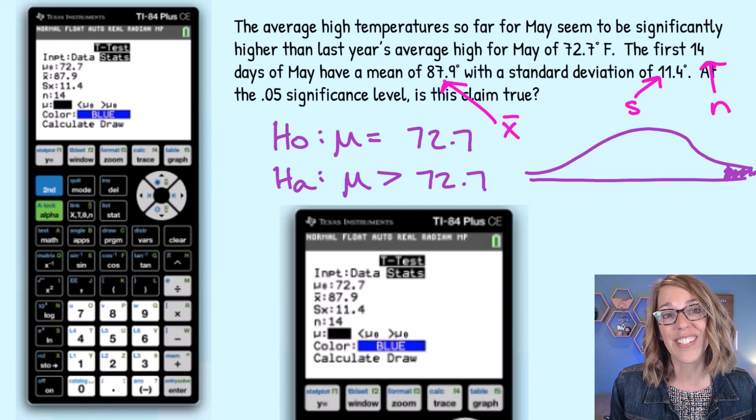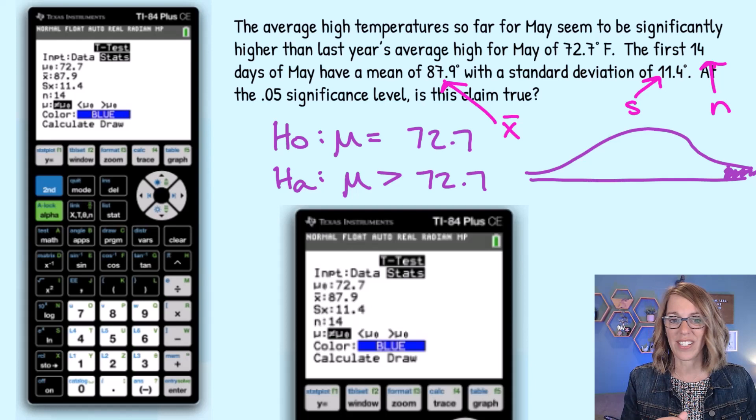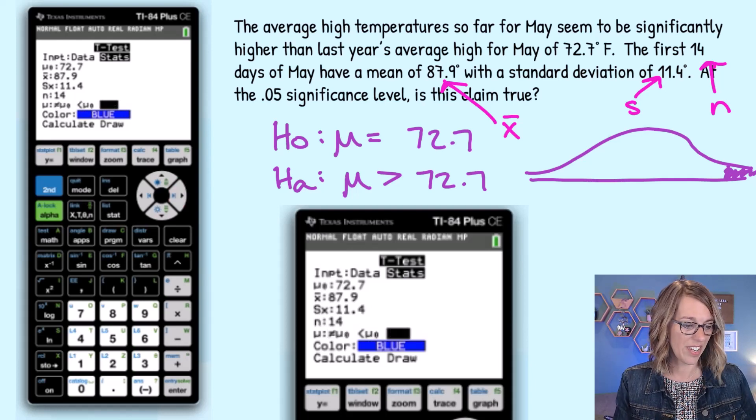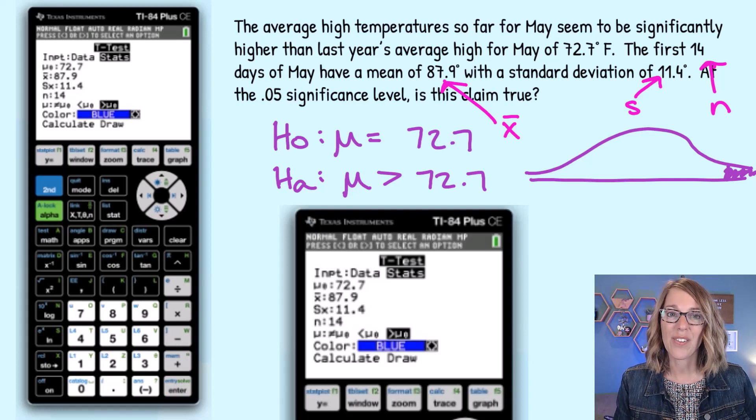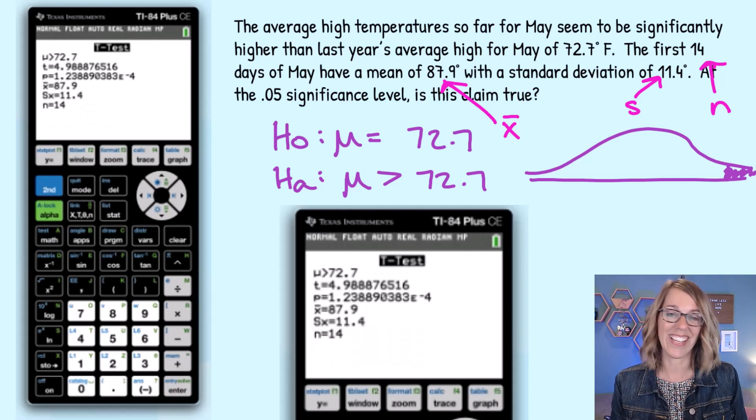This line is our alternative hypothesis. We've got a greater than for higher than last year's average. So I'm going to arrow over to the greater than and then hit enter and now I arrow down to calculate and the magic happens and I hit enter.